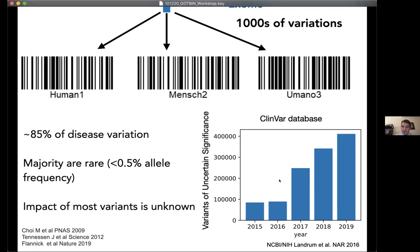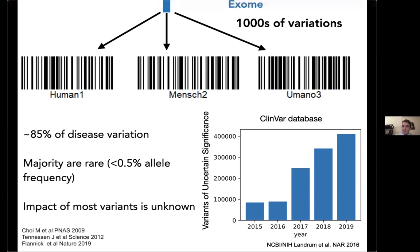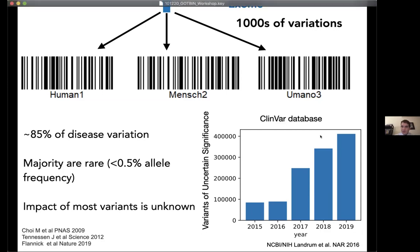Here is a plot showing the number of variants of uncertain clinical significance as a function of year, indexed in the ClinVar database managed by the National Institutes of Health in the US. With increasing genomic sequencing efforts, we are discovering more and more variants that cannot really be classified because they are too rare to be classified using traditional GWAS methods.